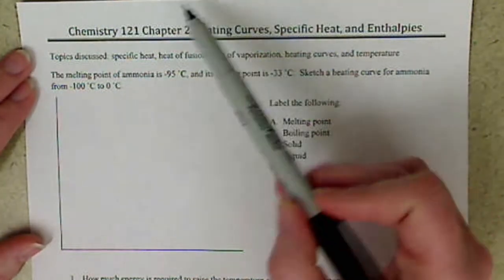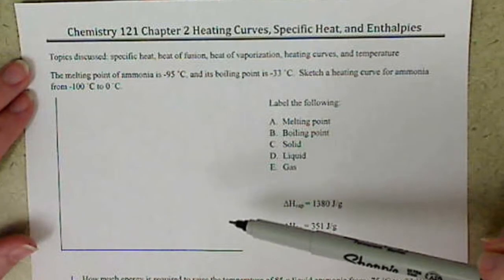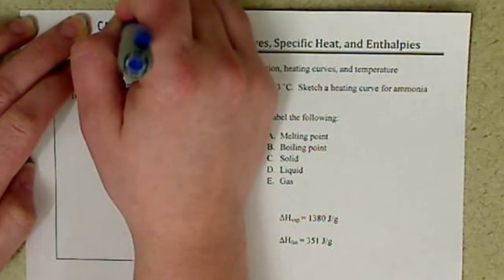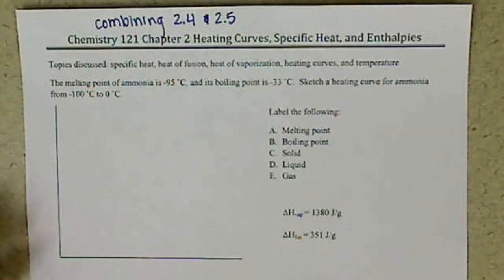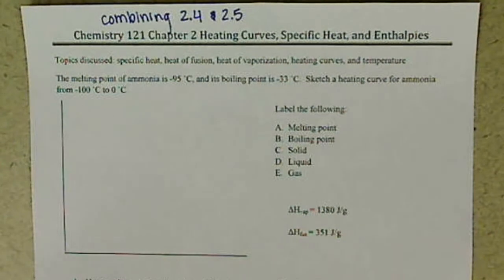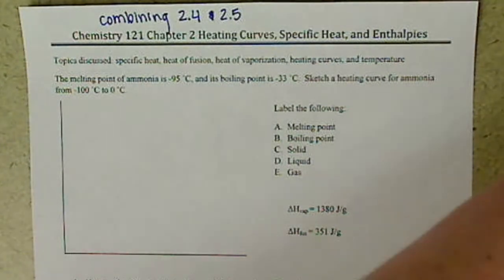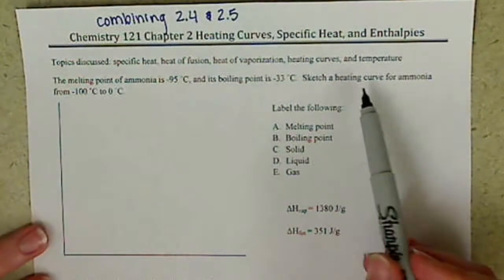This is a video describing extra activity material, basically looking at combining sections 2.4 and 2.5 — combining specific heat as well as enthalpies, that's our heat of fusion and heat of vaporization. We're going to work with ammonia. Normally we work with water, but it's good to use a different compound so we see the differences and similarities. We want to sketch a heating curve for ammonia.